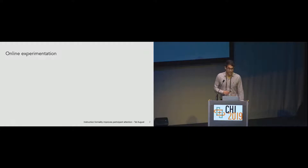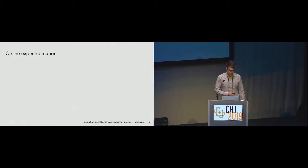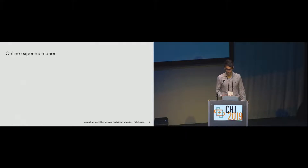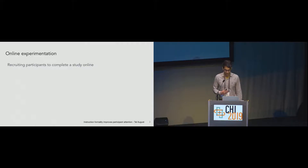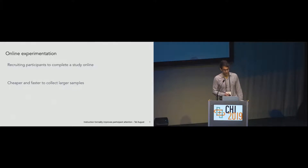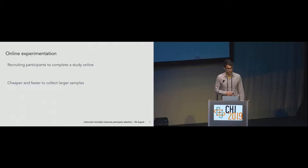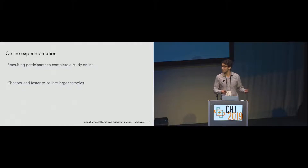So, first of all, what is online experimentation? Traditionally, if you're a researcher and you wanted to run a study with human subjects, you would recruit participants, sit them down in your lab, and have them take your study in person. Online experimentation is where researchers have participants take studies online instead. This has been gaining a lot of popularity recently since researchers are able to collect many more participants much more quickly and cheaply. Sending a survey or an online study out to thousands of people at once is a lot easier than getting 1,000 people to come into your lab.